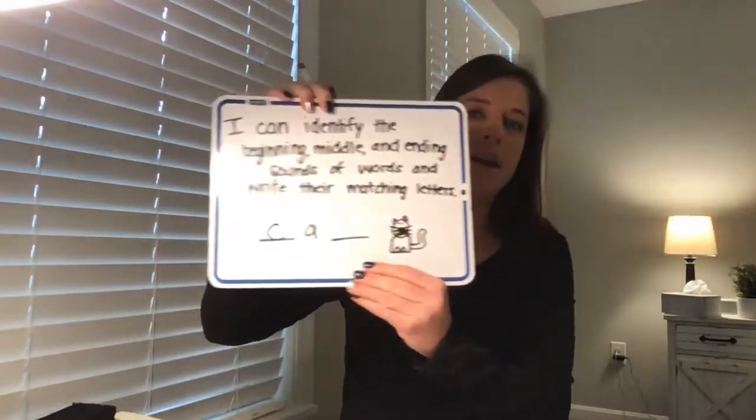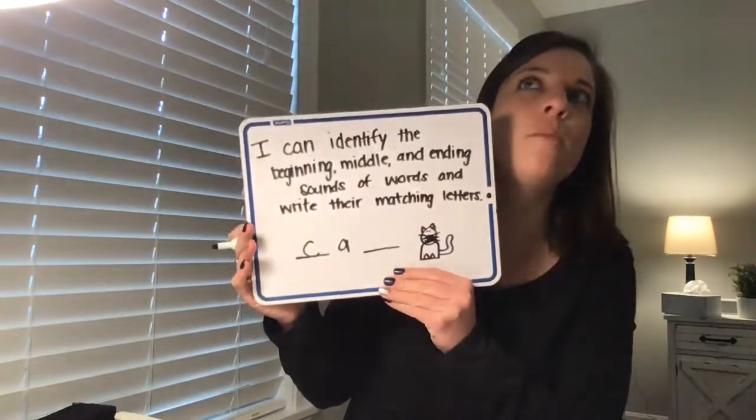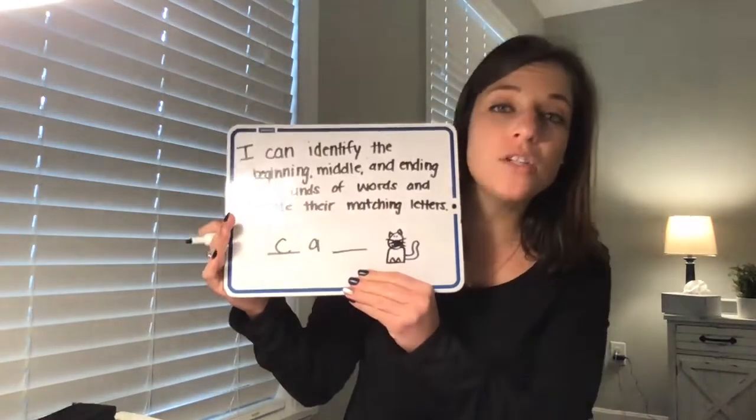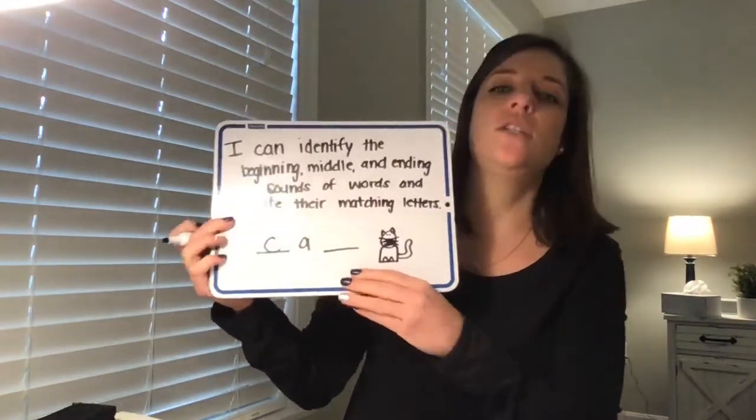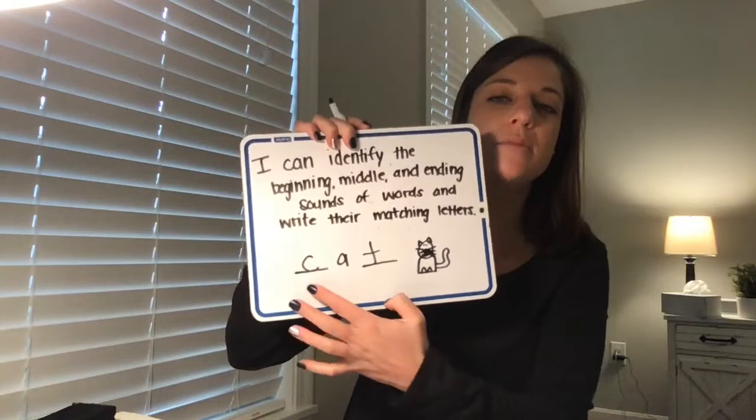Okay. Now I have C, A, T, T. Oh, I hear my last sound is a /t/. What letter says /t/? T. So I'm going to write a T on that last line. So now I have C, A, T. Spells cat.